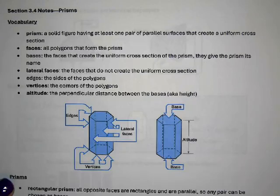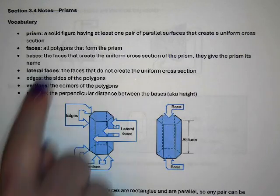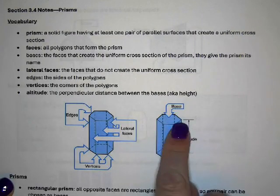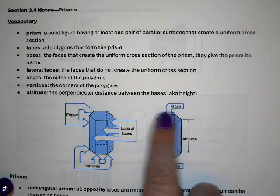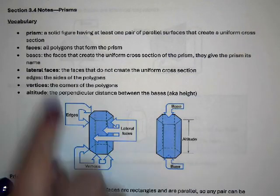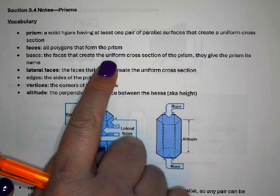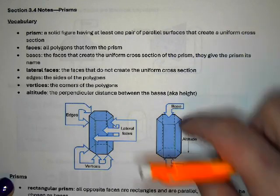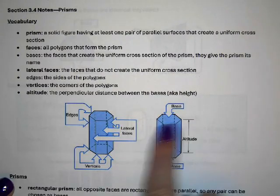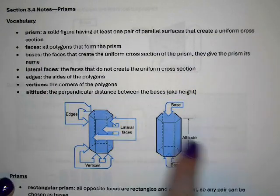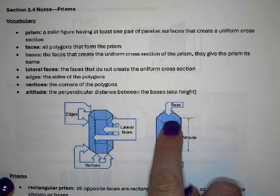The faces are all the polygons that form the prism. On top, this one looks like a hexagon — those are the faces. On the sides, we have rectangles. The bases are the faces that create the uniform cross-section of the prism — think of that as the top and the bottom. The bases give the prism its name, so this would be a hexagonal prism because the bases are hexagons.